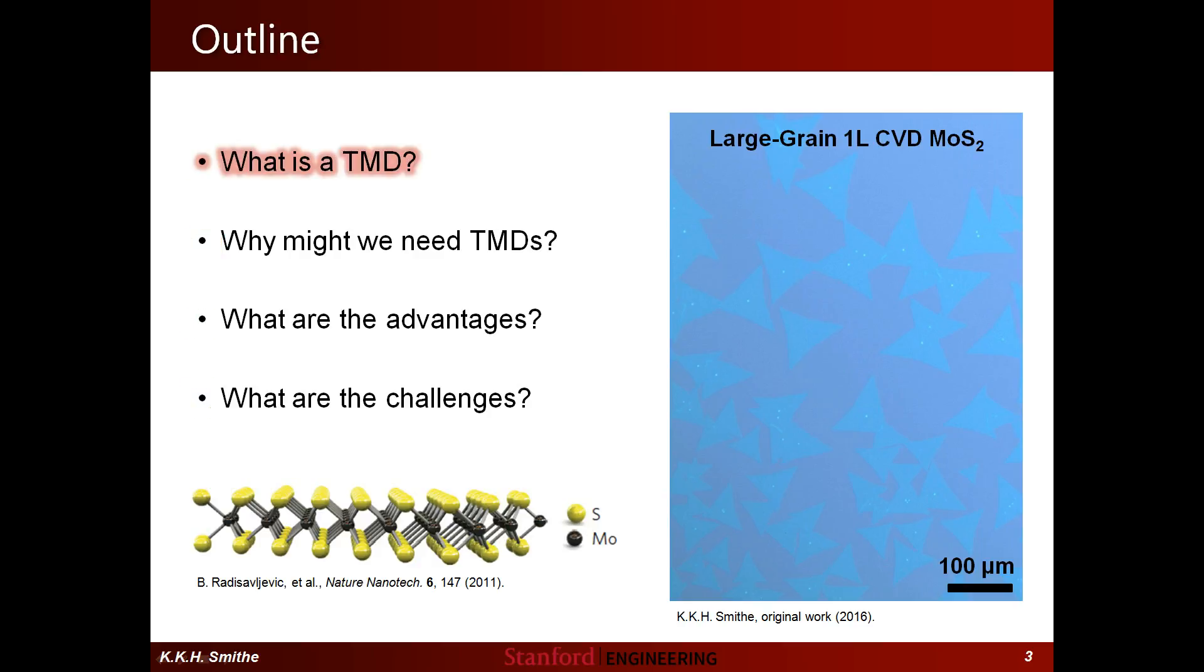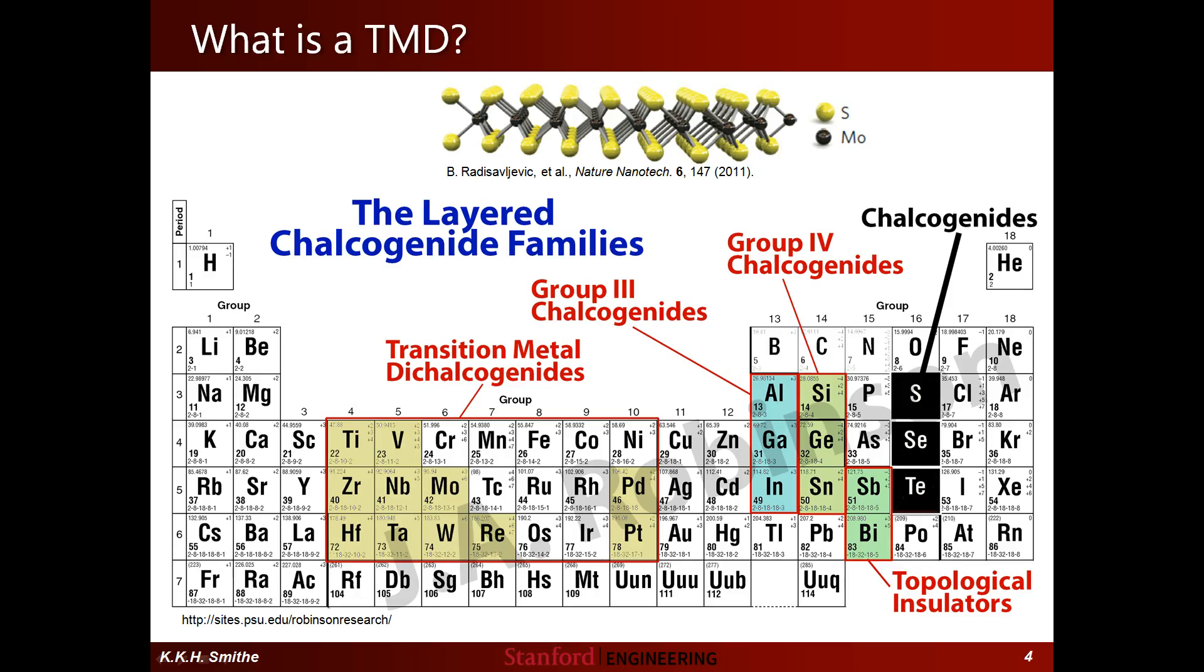So, what is a Transition Metal Dichalcogenide? Well if you break the name down, a TMD is exactly what it sounds like. A unit cell of a monolayer TMD consists of one Transition Metal Atom and two Chalcogens. But it's kind of a mouthful to keep saying Transition Metal Dichalcogenide, so I'll just say TMD for the rest of the video. But first, to show you guys why anyone is even interested in these materials anyway, I'm going to paint a bit of a background.